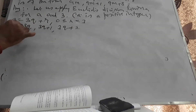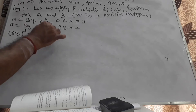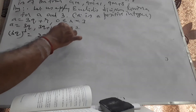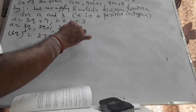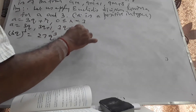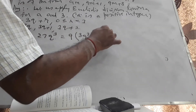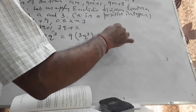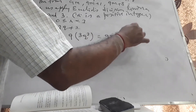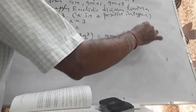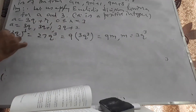(3Q)³ equals 27Q³, which is 9×(3Q³), which is of the form 9m where m equals 3Q³.